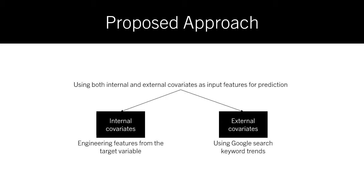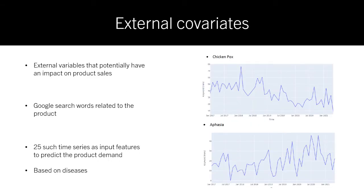Our proposed approach utilizes both internal and external covariates as input features for prediction. Internal covariates mean engineered features from the target variable itself, while external covariates are variables that we get from the outside. In our case, we get them using Google search keyword trends, which are transformed into time series data using the APIs Google has provided. These external covariates are external variables that potentially have an impact on the demand or the sales of the product.